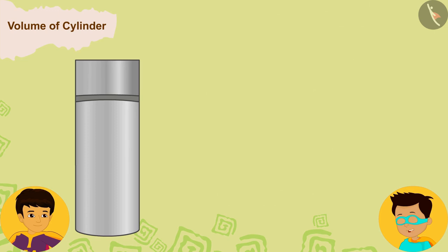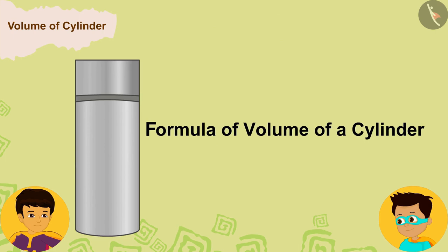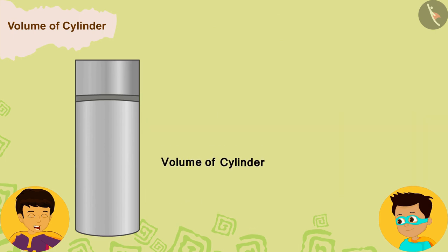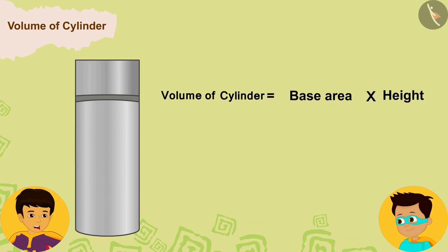Therefore its capacity is equal to the volume of the bottle. Now let me quickly tell you the formula of volume of a cylinder. The volume of any cylinder is equal to the area of its base multiplied by its height.